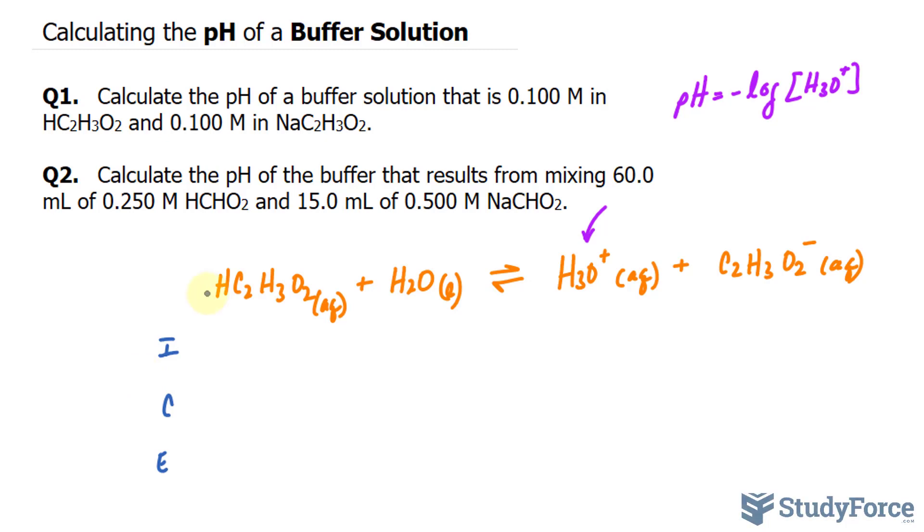We're told the initial concentration of acetic acid is 0.100 molar. We don't care about the concentration of water because it is in its liquid form and it's not in the equilibrium expression anyway. For hydronium, since acetic acid is a weak acid, it won't dissociate completely, so we write that it's approximately equal to 0 molar. We're told in the question that the anion will couple with sodium, and its concentration will be 0.100 molar.